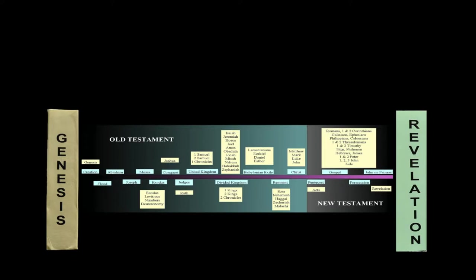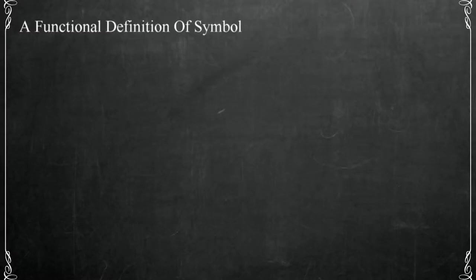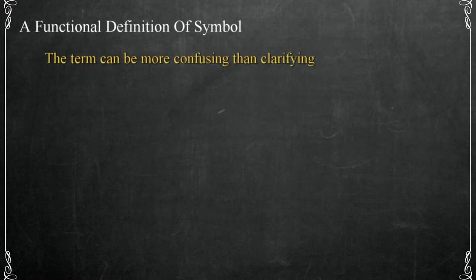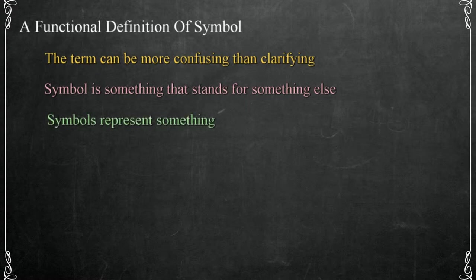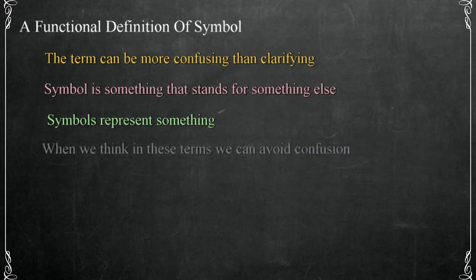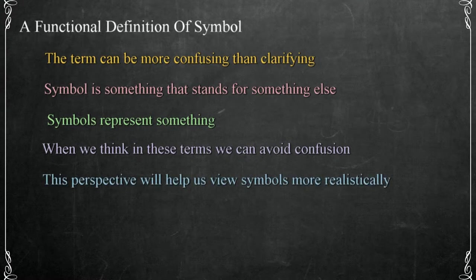But to get to that point, we have to gain a very intimate understanding of the subject. When the term symbol is used in conjunction with the Bible, it can take on a life of its own and could end up being more misleading than clarifying. In its simplest form, we can think of a symbol as something that stands for something else — symbols represent something. When we think of one thing representing a person, place, or event, we can avoid becoming complex, vague, or mystical. That's what symbols are in the Bible: elements of the message that represent something else, pointing us in the direction of understanding biblical symbolism in a more realistic manner.